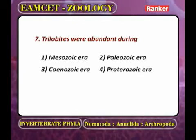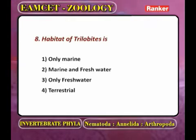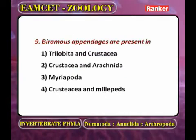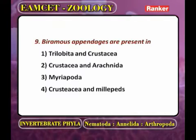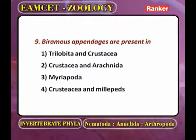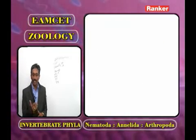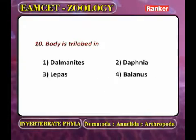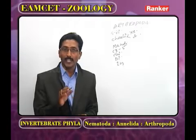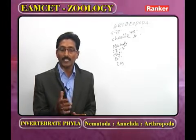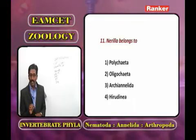Ninth: biramous appendages are present in extinct arthropods (Trilobita) and present-day living arthropods (Crustacea). Tenth: the body is trilobed in Trilobita — the body is divided into three lobes: head, thorax, and pygidium (abdomen), hence the name Trilobita.